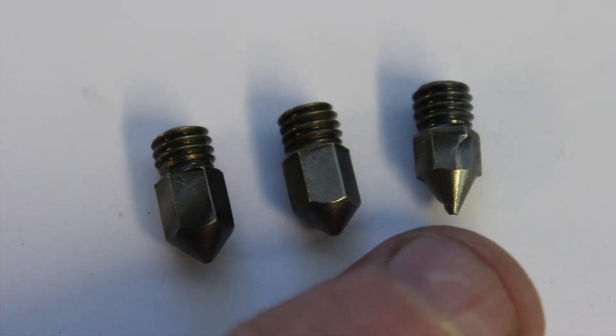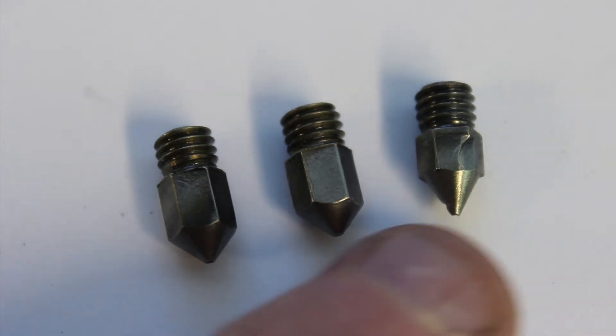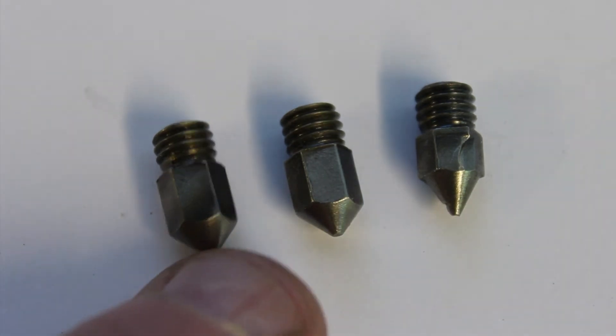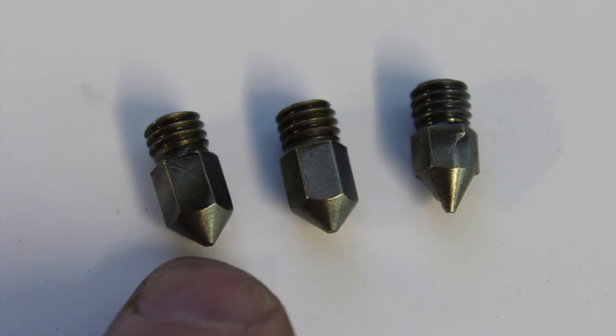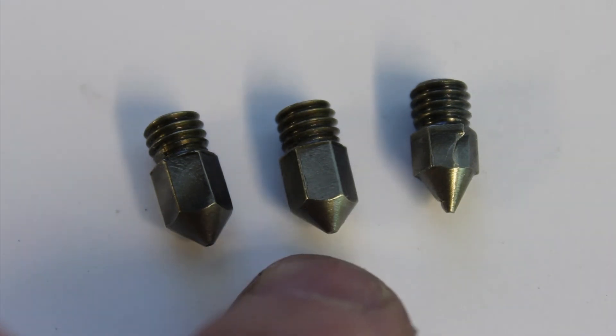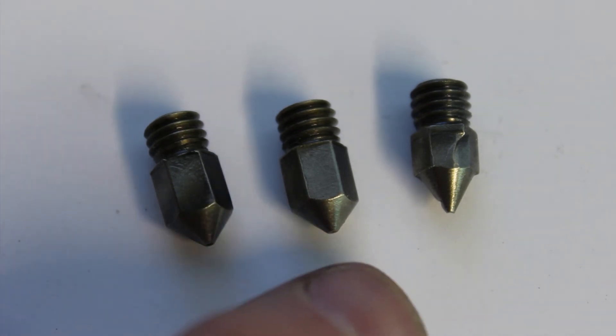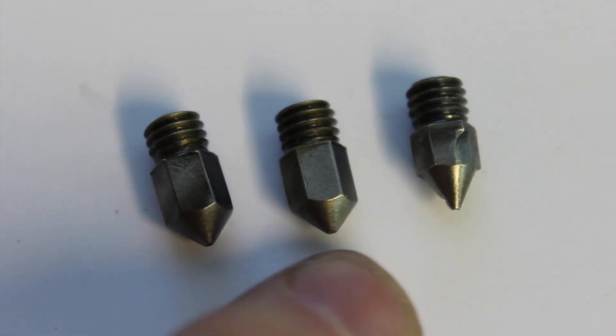So there we have it. Three nozzles. There's my finger for scale. All with 0.3mm holes in them. That one's a bit manky, but hey, we'll give them a go. Once I've tried these out on the 3D printer, I'll let you know how I get on. They're hardened, so they're for printing carbon impregnated filament. So thanks for watching.